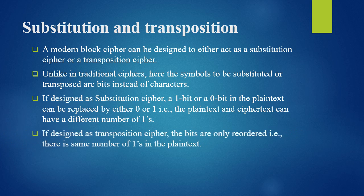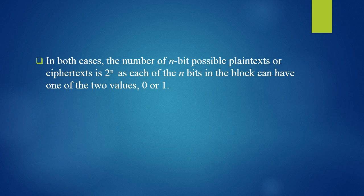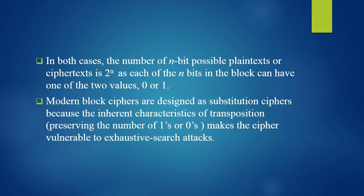Coming to transposition ciphers: in transposition ciphers, we just rearrange the bits in our n-bit block. That is, the number of 1s will remain the same because we are just re-ordering them. In both cases, the number of n-bit possible plaintext or ciphertext blocks is 2 raised to the power n, as each of the n bits can have one of two possible values, 0 or 1.